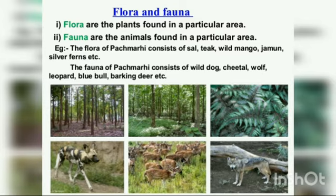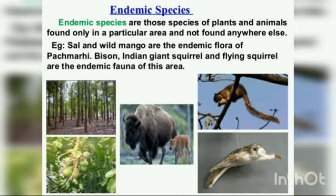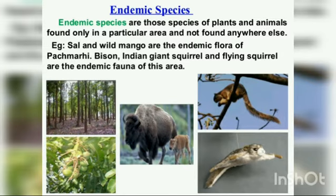Now we are going to talk about endemic species. What do you mean by endemic species? Endemic species are those species of plants and animals which are found exclusively in a particular area. They are not naturally found anywhere else — they are found only in a specific, exclusive area. A particular type of animal or plant may be endemic to that zone, state, or country, and those are called endemic species.